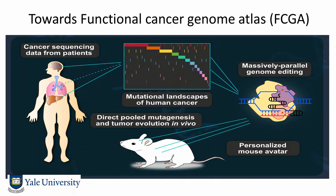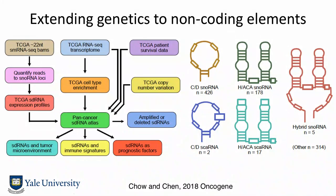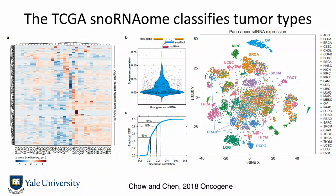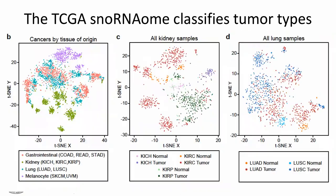We believe this is a powerful technology to map out the functional genome atlas, turning the knowledge of mutation sequences from patients directly into functional drivers — giving you animal models that connect genotype to phenotype. These are coding genes. We're now trying to extend the effort to non-coding elements. We utilized the TCGA small RNA sequencing effort to map out the snoRNA-ome in 31 cancer types, and after checking the distribution and annotating more than 1,000 snoRNAs, we generated a large map of where they're expressed, how they're regulated, and which cancer type they appear in.